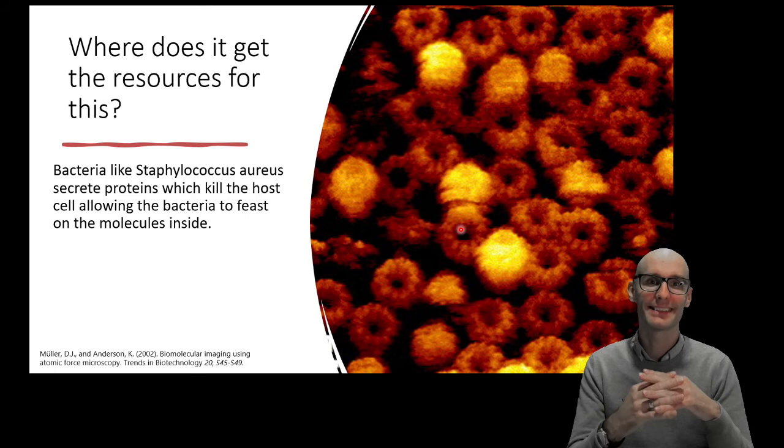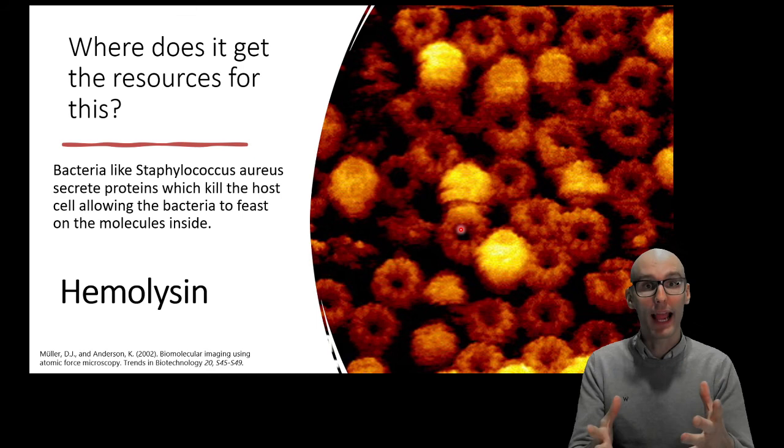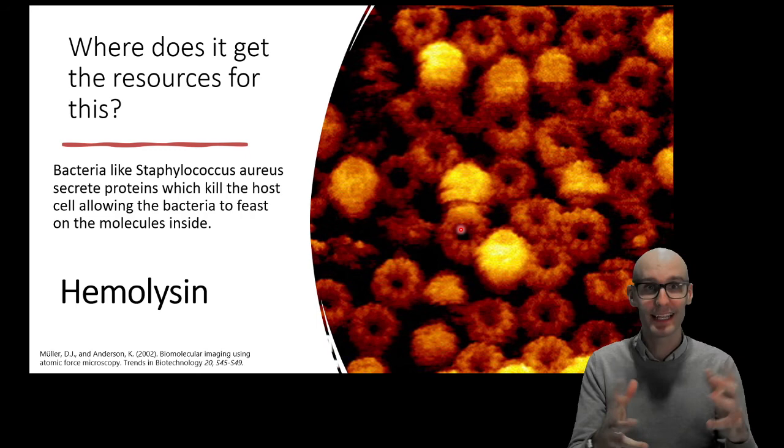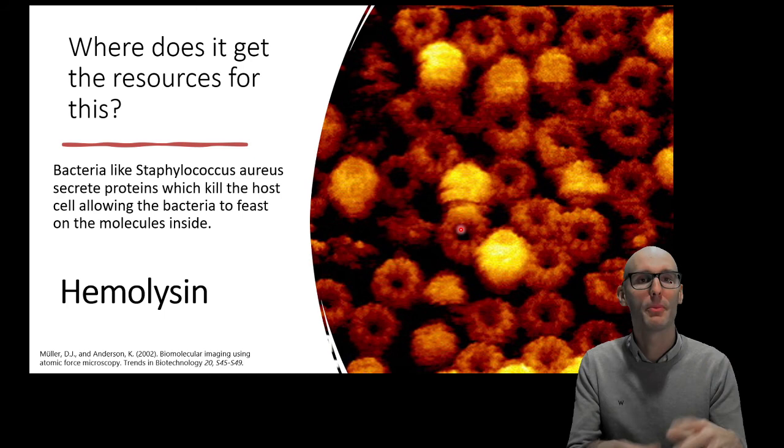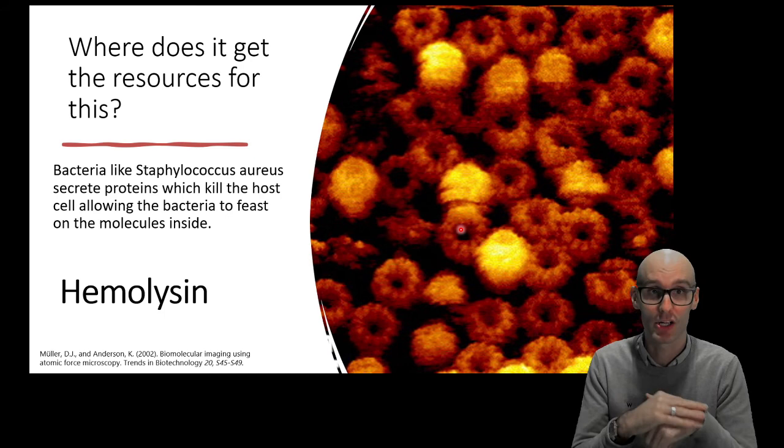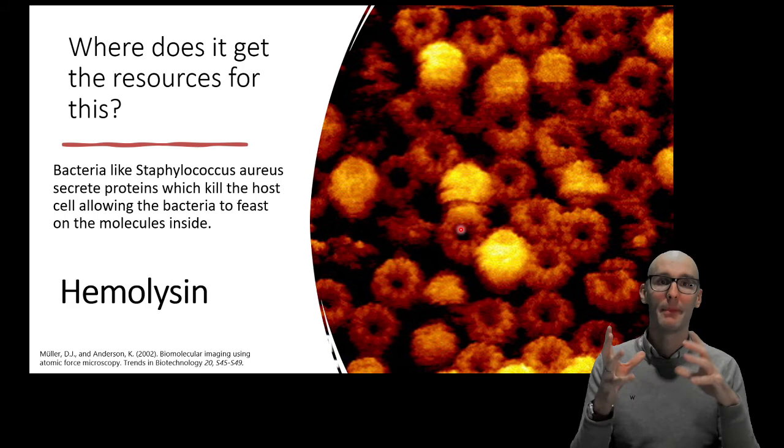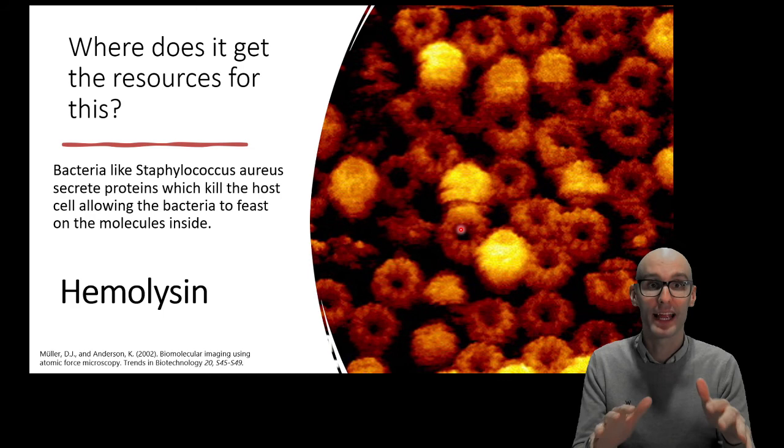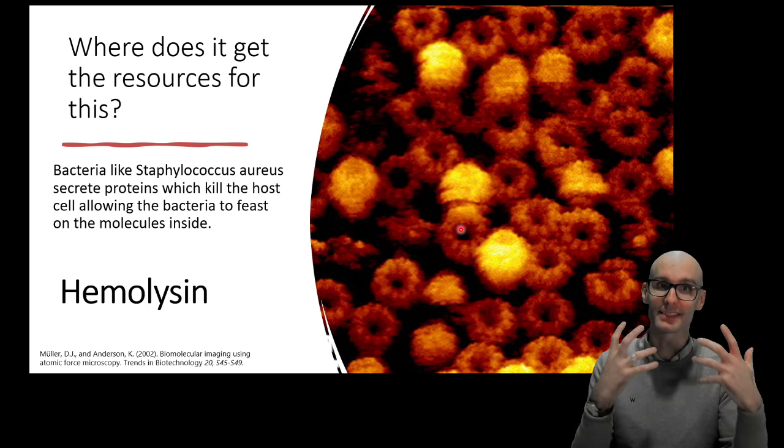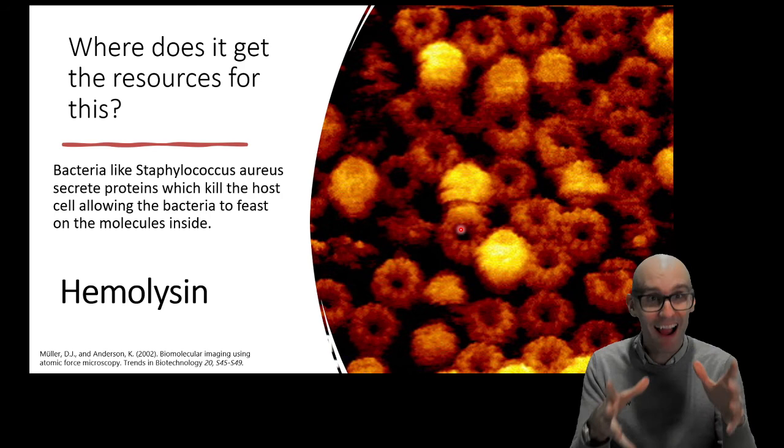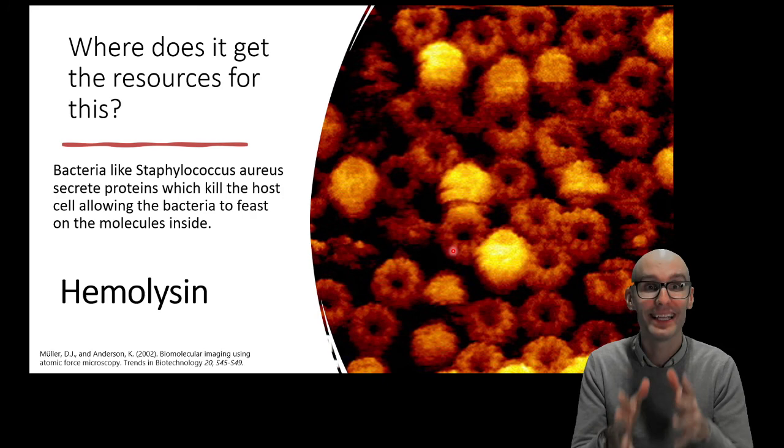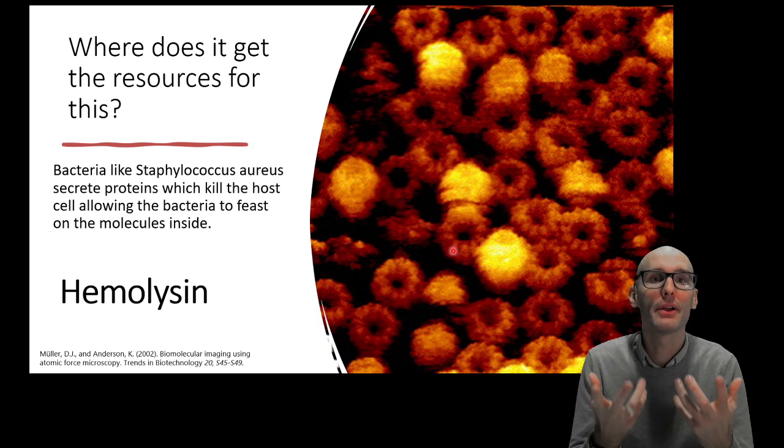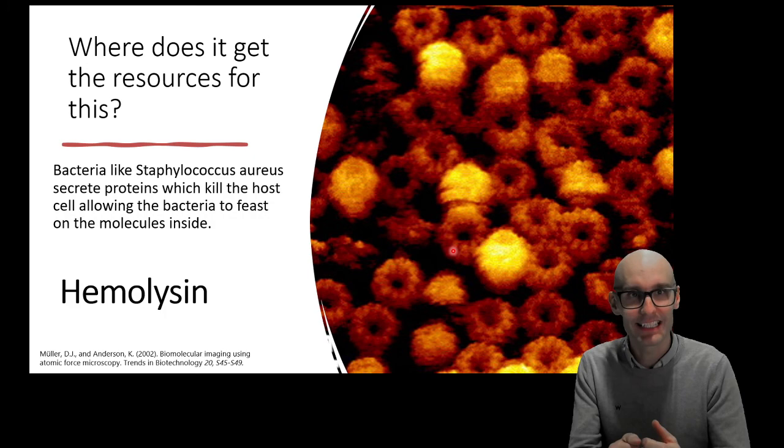One famous one is hemolysin. Lyse means to pop. If we lyse a cell, we pop a cell. Hemo is derived from hemoglobin and hemoglobin is inside red blood cells, because the hemoglobin allows oxygen to be transferred around our body. Inside that hemoglobin is iron. Iron is what attracts the oxygen to the hemoglobin inside your red blood cells. Bacteria love iron and they're often iron deficient when an infection is going on. Our body does this clever trick where it sucks up as much iron as it can to try and starve the bacteria. So the bacteria produce this protein, hemolysin. Hemolysin is a pore-forming protein that's going to insert itself in the membrane of red blood cells and pop them, spilling its guts, allowing the bacteria to feed on the protein and iron released.